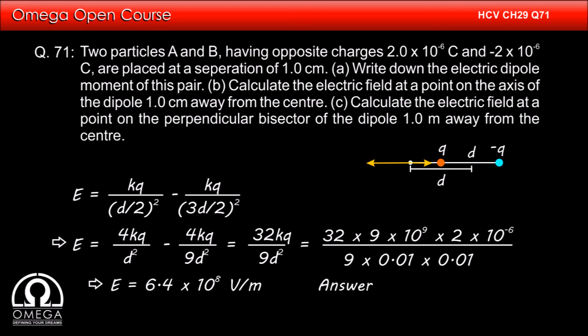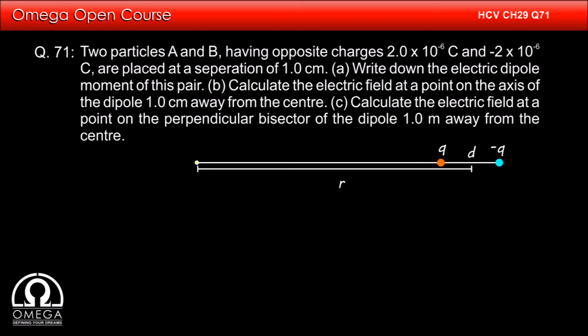This is the answer to part B of the question. This answer is different from what is given in the book — the answer in the book is wrong. You will get the book's answer if the point is at a distance of 1 meter instead of 1 centimeter. In that case, the distance is very large compared to the separation between the charges, and hence we can use the dipole formula for the electric field.